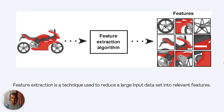Feature extraction is a technique or algorithm that extracts regions or features of interest so that we can use these features to perform some kind of detection or classification task. It reduces large input data into relevant features. The feature extraction algorithm can be handcrafted in earlier literature, or it can be a deep convolutional neural network.